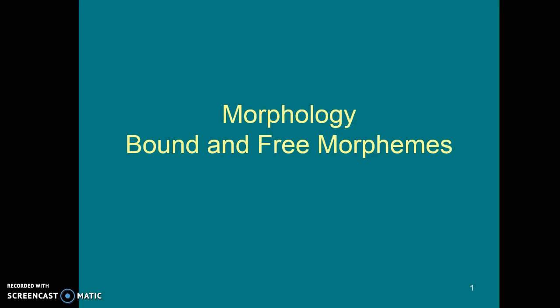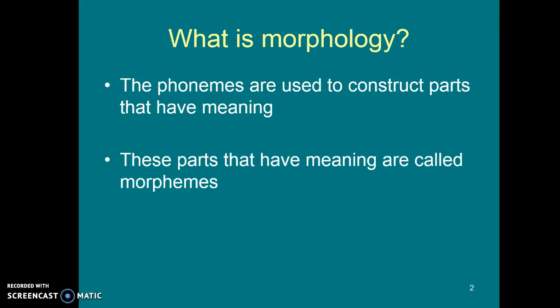We're now going to move from the subject of phonology to the subject of morphology. We're going to consider two types of morphemes: bound morphemes and free morphemes. First we have to establish exactly what morphology is. Phonemes were the smallest parts of language that on their own don't mean anything. Now we're going to move to the meaningful parts — phonemes put together in ways that predictably mean things, that have recognizable meanings.